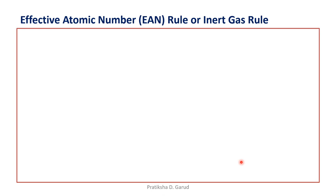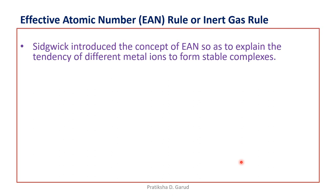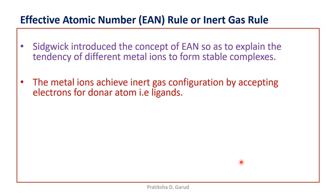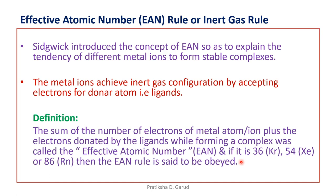Based upon this, we have the effective atomic number, also known as the EAN rule or the inert gas rule. The Sidgwick introduced the concept of EAN — effective atomic number — so as to explain the tendency of different metal ions to form stable complexes. The metal ions achieve inert gas configuration by accepting electrons from the donor atoms, that is the Lewis bases, meaning the ligands. The definition of EAN: the sum of the number of electrons of the metal ion plus the electrons donated by the ligands while forming the complex is called the effective atomic number. When this effective atomic number is either 36 (configuration of krypton), 54 (xenon), or 86 (radon), then the EAN rule is said to be obeyed.